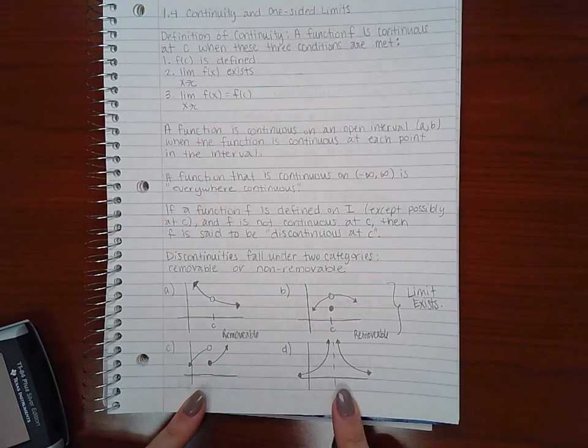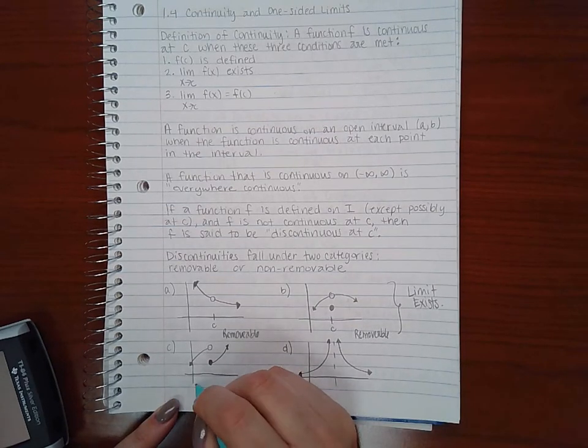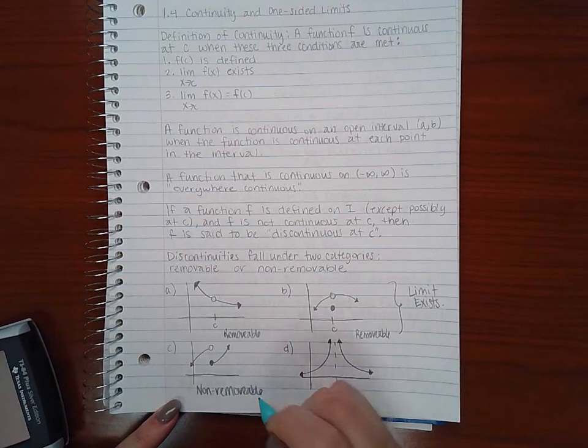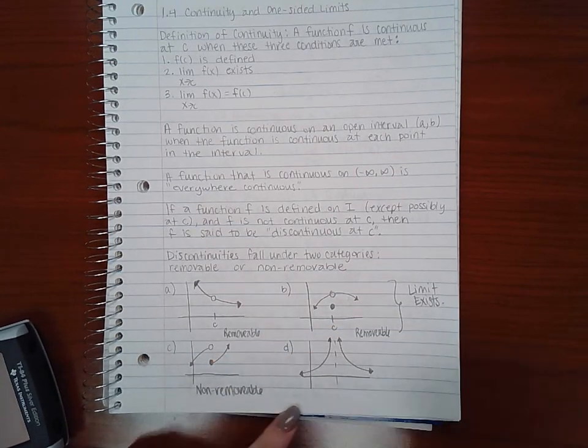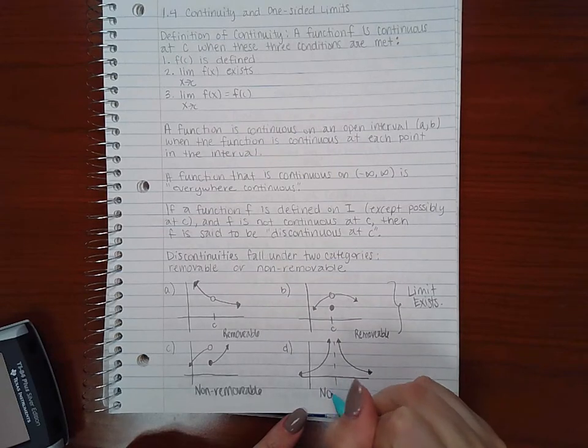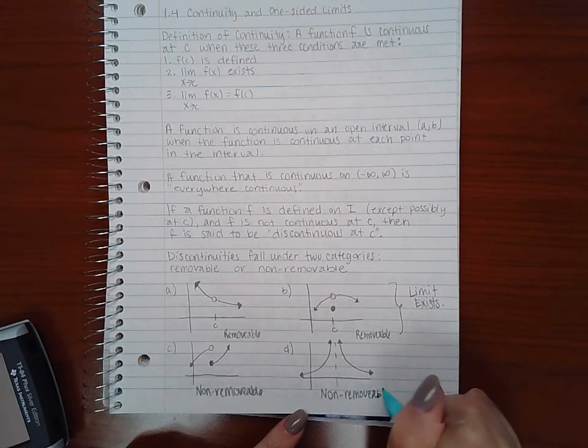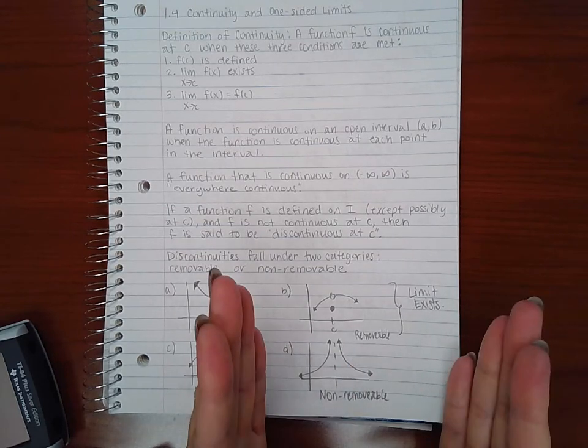Example c and d, though, are non-removable. Notice there's a break in the graph. And this one is also non-removable. Again, a break in the graph.